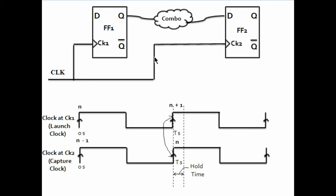Now, let's consider a scenario. The data is getting launched from flip-flop 1 at 0 seconds and it has to be captured at flip-flop 2 after one time period. Now, the same clock is going to both the flip-flops and for simplicity I have considered 0 skew here, which means that the clock is reaching both the flip-flops — launch and capture — at the same time. Now, the hold time is to make sure that the current data being captured at the capture flop should not be corrupted by the next data which has been launched from the launch flop at the same edge.